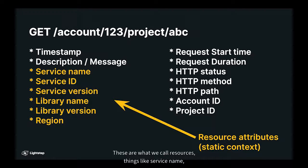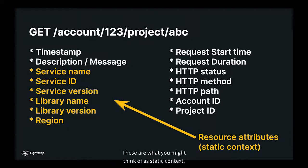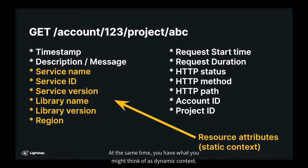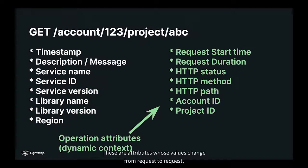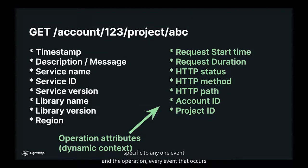Some attributes are static — these are what we call resources. Things like service name, the version of the service, the library that produced this event and its version, what region or data center this was occurring in, what Kubernetes pod or container ID. These are static contexts consistent across every event occurring in this service. At the same time, you have dynamic context: attributes whose values change from request to request but are nevertheless interesting for every event associated with that request — the request start time, duration, HTTP status, whether the operation was an error, and application-specific attributes like account ID and project ID. Every event that occurs within this operation would want to be indexed according to these values.